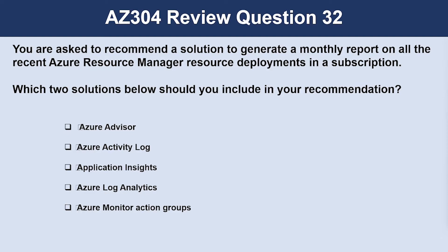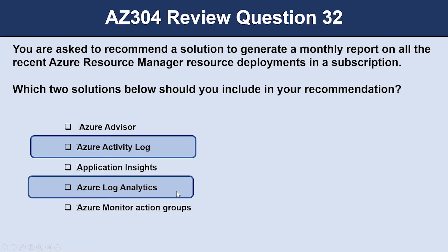Question number 32: You are asked to recommend a solution to generate a monthly report on all recent Azure Resource Manager resource deployments in a subscription. The correct answers are Azure Activity Log and Azure Log Analytics. Activity Log allows you to monitor operations on resources in a subscription, and activity logs can be queried and reviewed in Log Analytics. Azure Advisor does not provide deployment reviews — it provides best practices guidance. Action groups are a set of actions taken in response to an alert, not for viewing deployments.